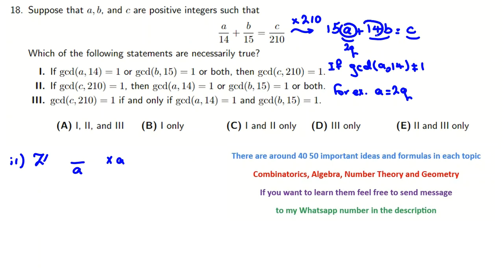So if A and 14, if they have a common prime, a common factor, then left side will be multiple of that factor, so C should be also multiple of that factor. Understood? Okay, so now by this point, for example, I want to say third one is correct.